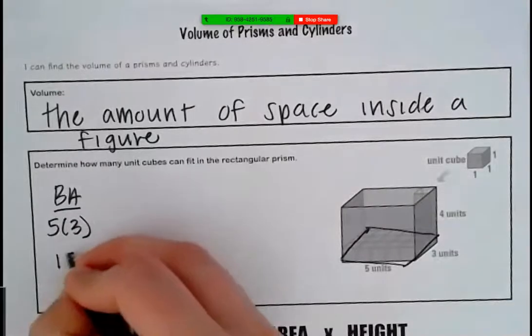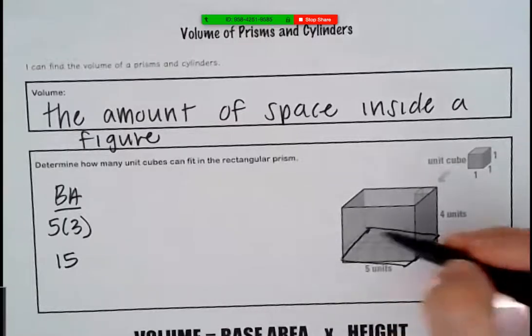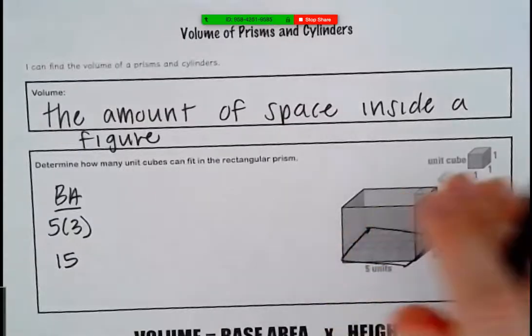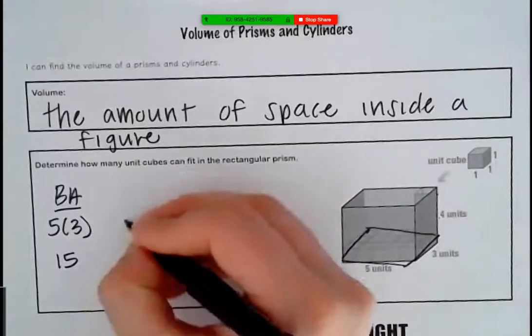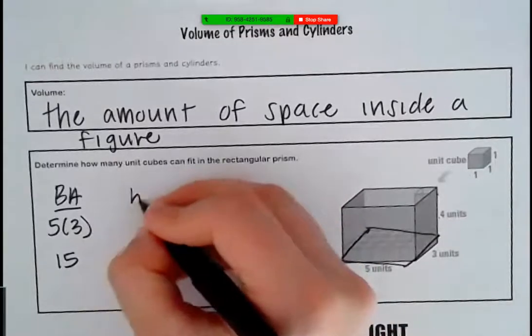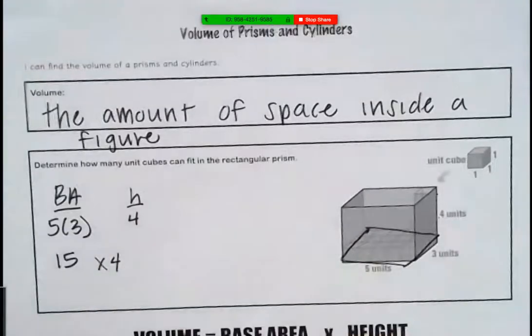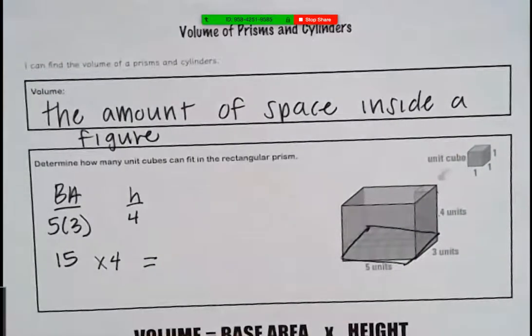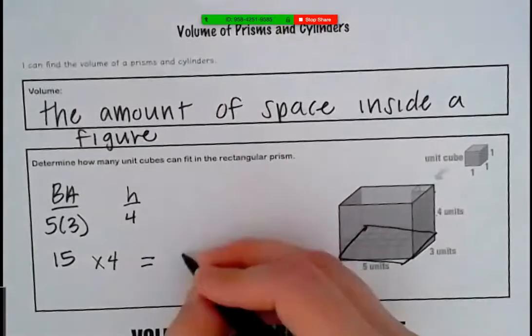Now think, I'm going to have 15 of those, 15 four times. If that's how many times I'm going to stack 15 on top of itself, we have to take 15 times our height of four. And what do we get? 60. So we can fit 60 unit cubes inside there.